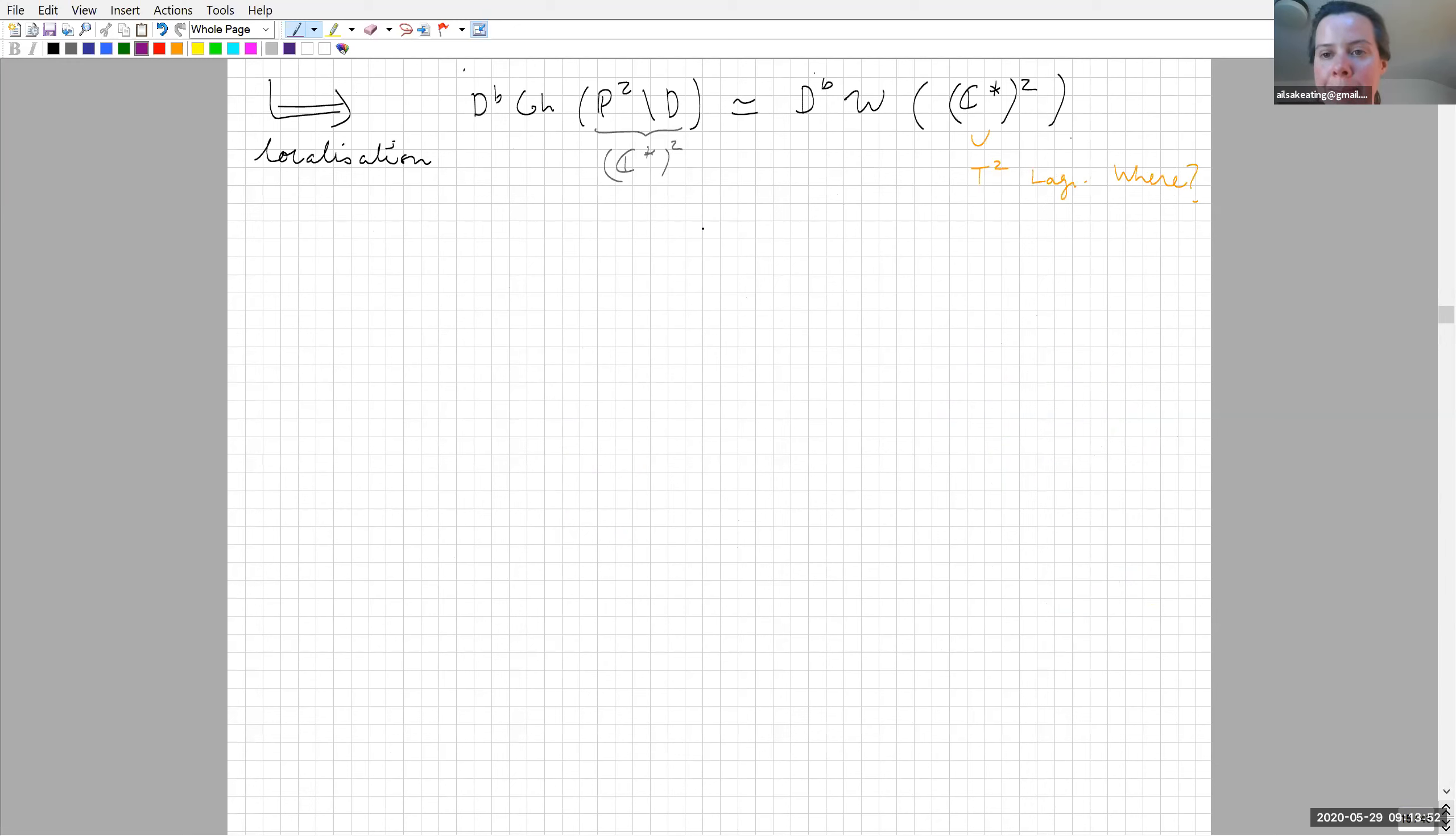You could use localization to see that coherent sheaves on P² minus D, that's just C* squared, is the same as the wrapped Fukaya category of C* squared. At this point I want to make an aside: even though we're talking about homological mirror symmetry, there are obvious SYZ fibrations in this case. In particular, there's a favorite Lagrangian torus on the right-hand side, which is the exact guy in T*T². How do I see it in this picture? Instead of using V₀, V₁, V₂, I can look at the dual exceptional collection.